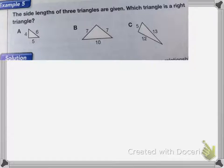So on this one, the lengths of 3 triangles are given. Which triangle is a right triangle? So first I need to square the lengths of each side, and I need to look for the Pythagorean relationship, because the Pythagorean Theorem only works with right triangles. So for A,